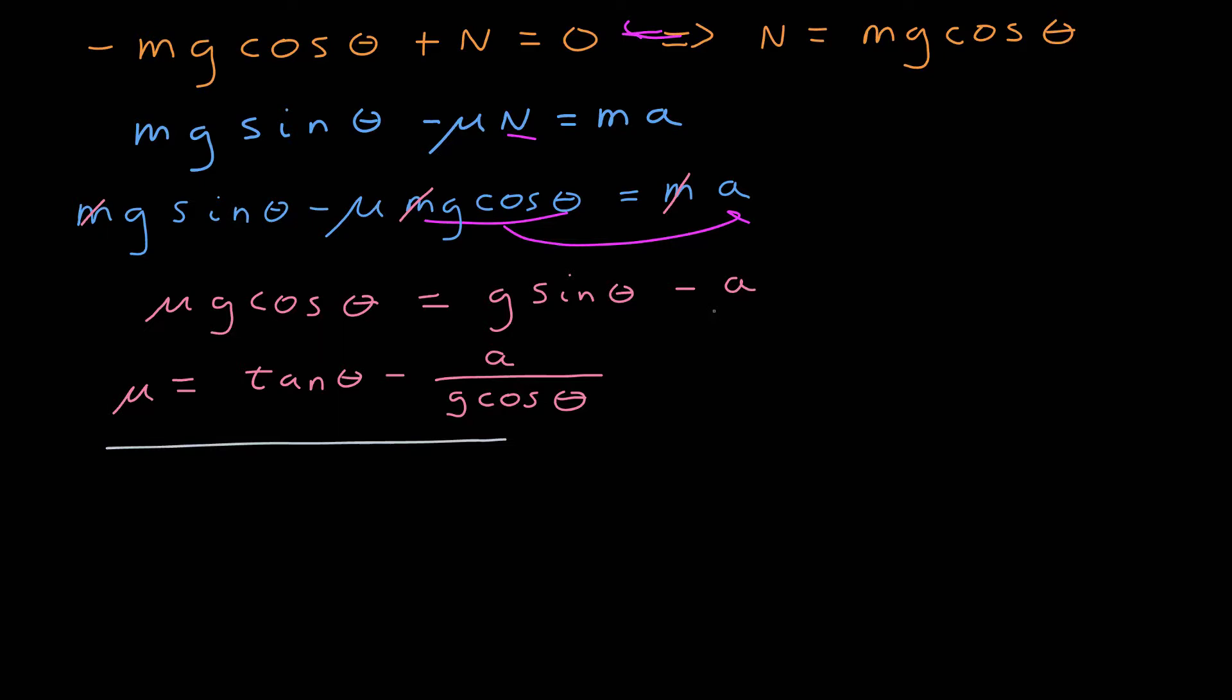And now divide both sides by g cosine theta. I get tangent theta minus a over g cosine theta. Now I know all those terms. I measured a and theta from the video, so I can go ahead and plug in those numbers. And I get a coefficient of kinetic friction, which is 0.34.